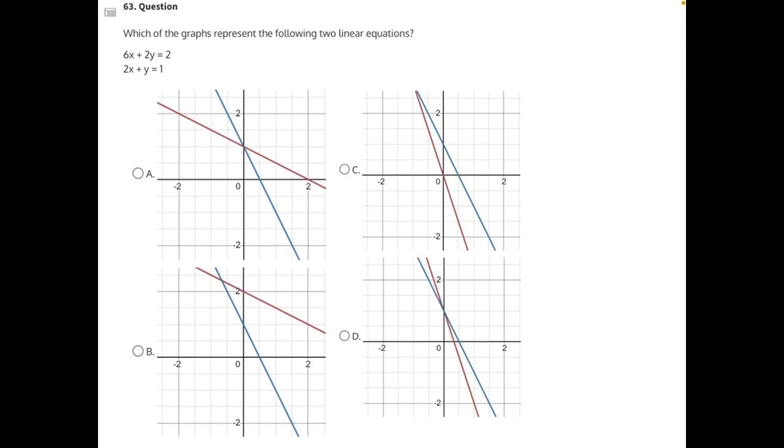Which of the graphs represent the following two linear equations? To solve this, we're going to need to change these linear equations into slope-intercept form. y equals mx plus b, where m is equal to our slope, and b is equal to our y-intercept. And then we can use those two pieces of information to figure out which of these graphs represents the equations.